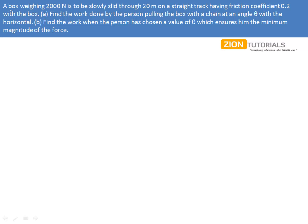As the question says, a box weighing 2000 N is to be slowly slid through 20 meters on a straight track having friction coefficient 0.2 with the box.